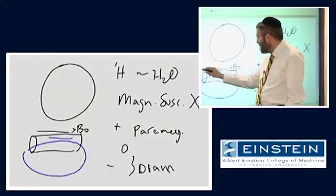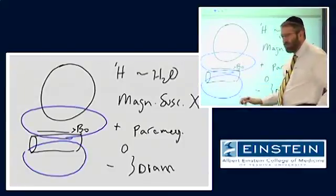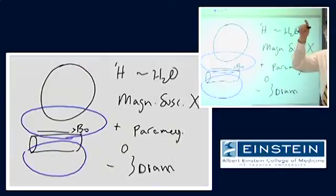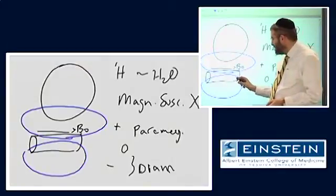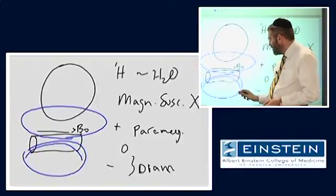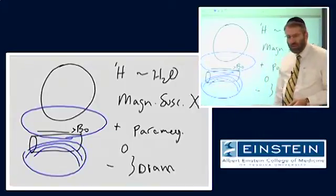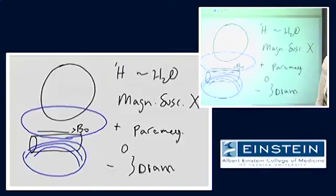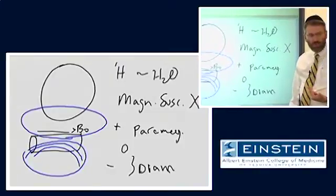You may have seen one of these diagrams before where you have a magnet and there are these elliptical lines radiating out from it. These magnetic field lines allow us to describe two features of the magnetic field: one is its strength and the other is its homogeneity.